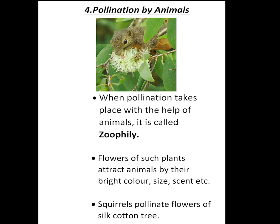The next agent for pollination is animals. When pollination takes place with the help of animals, it is called zoophily. Zoophily is a form of pollination whereby pollen is transferred by animals. While feeding, animals accidentally rub against the stamens and get pollen stuck all over themselves. When they move to another flower to feed, some of the pollen can rub off onto the new plant's stigma, and thus pollination takes place. These flowers attract animals by their bright color, size, scent, etc. Example: squirrels pollinate flowers of silk cotton tree.